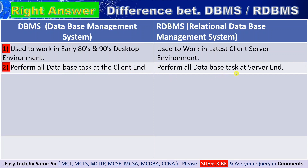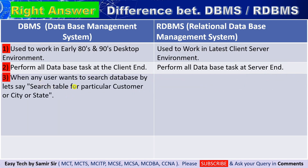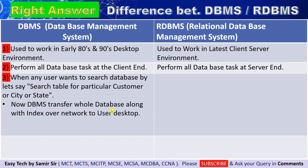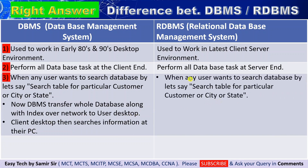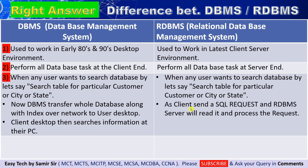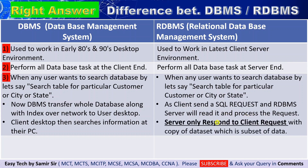When a user wants to search a database — say, search a table for a particular customer, city, or state — what DBMS used to do was transfer the whole database along with the index over the network to the user's desktop, and the client would then search the information on their own PC. Whereas in RDBMS, when a user sends a query such as 'SELECT from master WHERE customer = Tata' or 'WHERE city = Mumbai', the RDBMS server gets the request, reads and processes it, and responds with only a subset of the data.